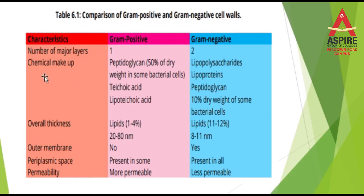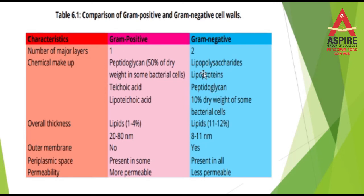This is a short question: what is the difference between the chemical composition of gram-positive and gram-negative bacteria? Peptidoglycan is 50% in gram-positive and 10% in gram-negative. Gram-positive also have teichoic acid and lipoteichoic acid, while gram-negative have lipoprotein, peptidoglycan, and lipopolysaccharide.